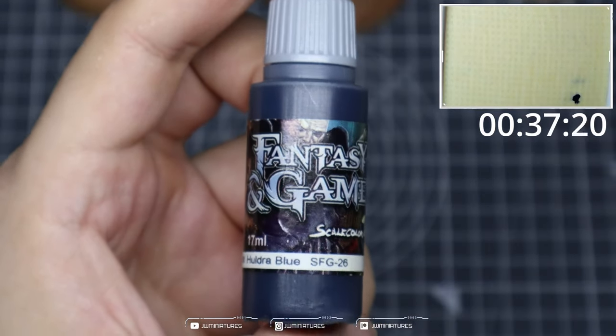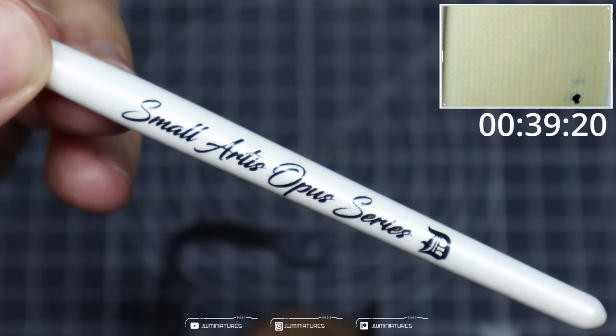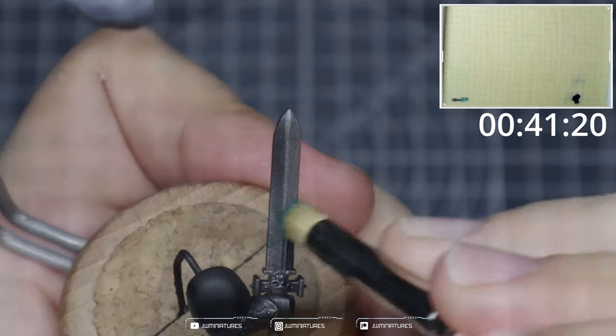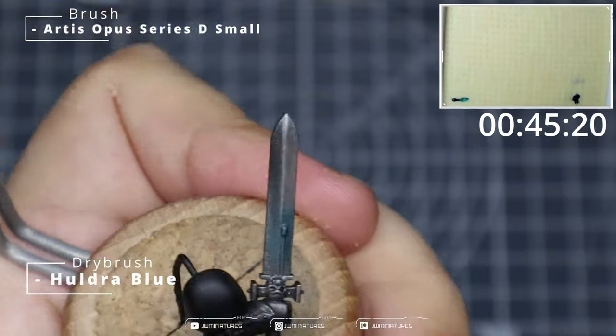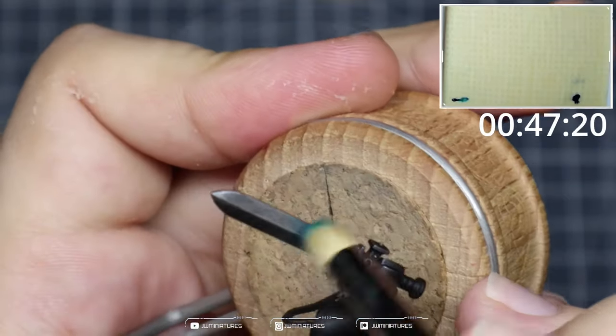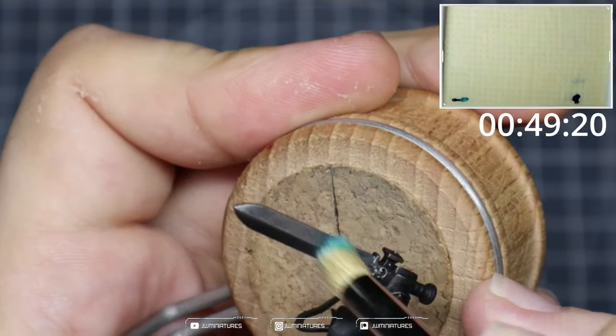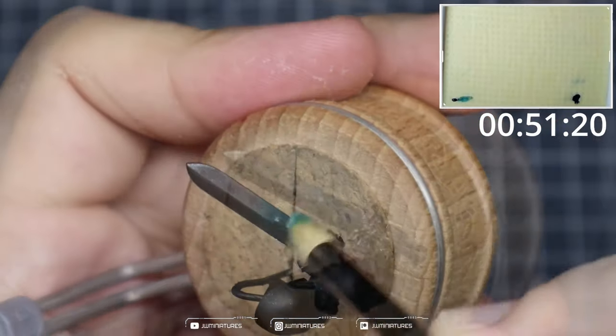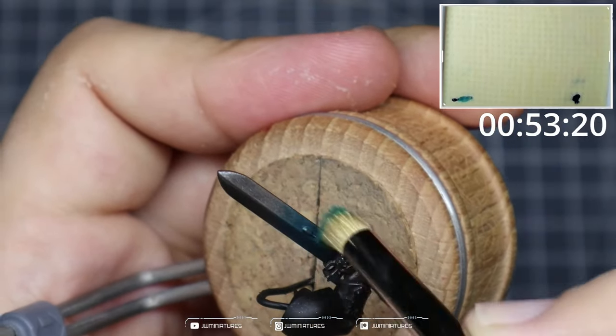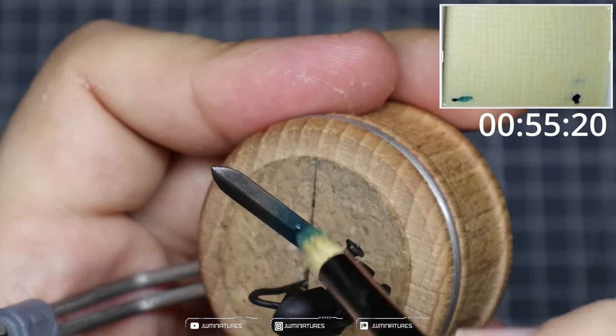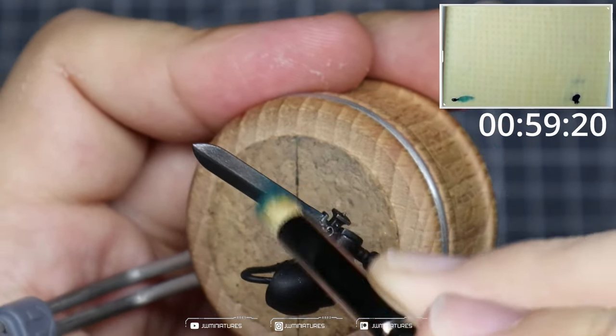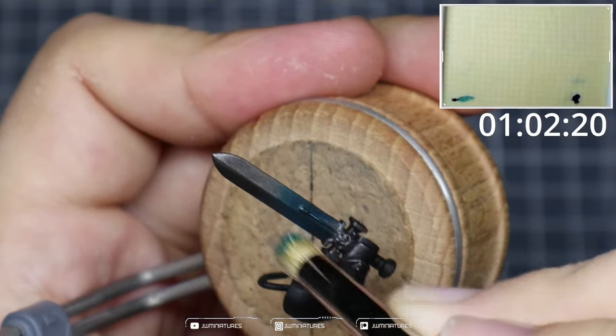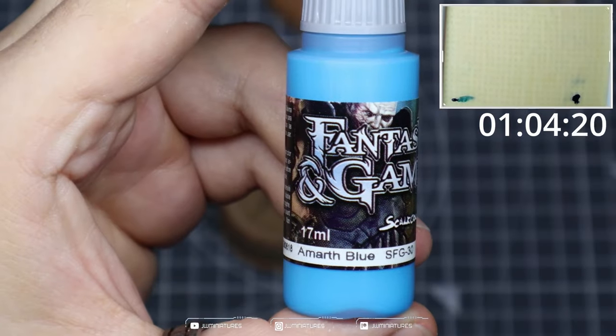We're going to be starting off with some Huldra Blue here and a small dry brush this time. I'm not using a dry palette because I'm not too worried about the amount of moisture in the brush or in the paint at this point. We're just going to create some circular motions at the tip of the power rod, focusing on creating circular patterns around the tip, and as you go further away from that point you want to soften your strokes.